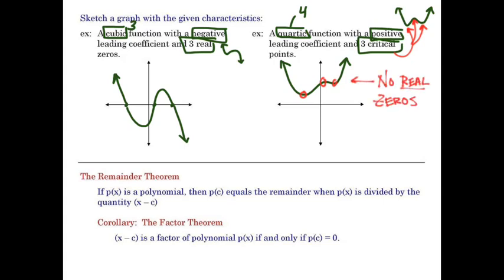We have no real zeros here in the way this is drawn because I have no intercepts with my x-axis.